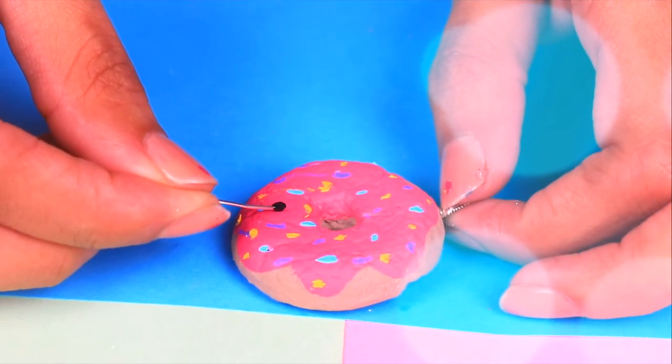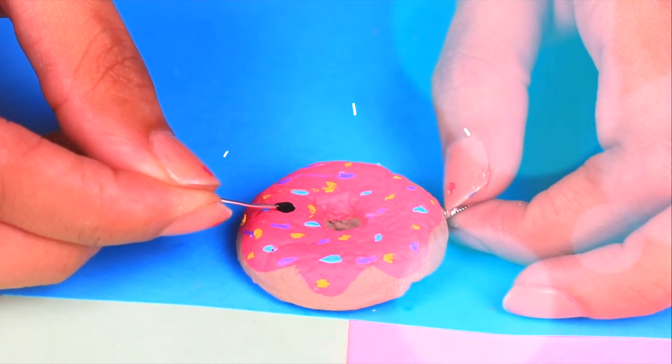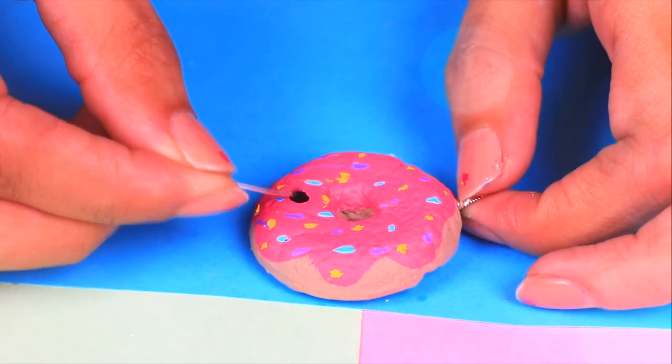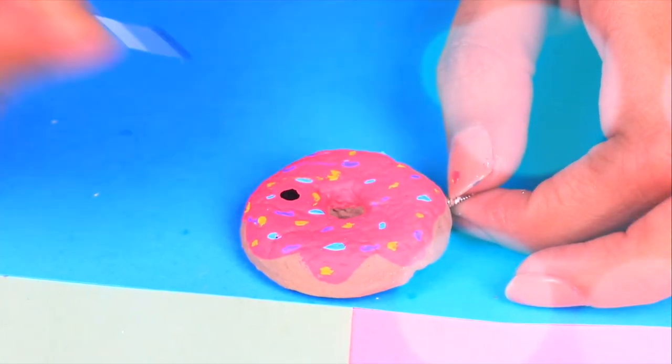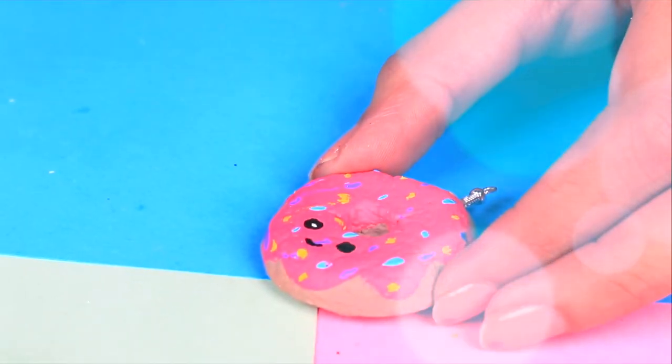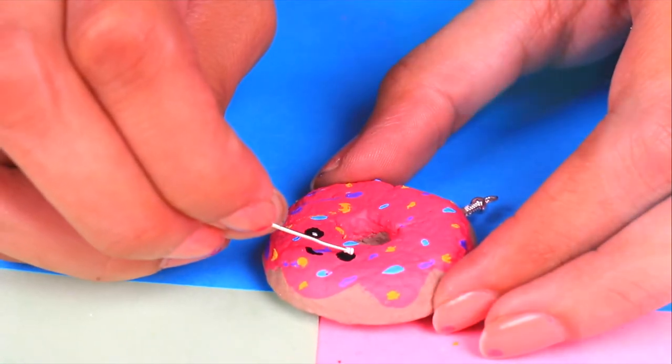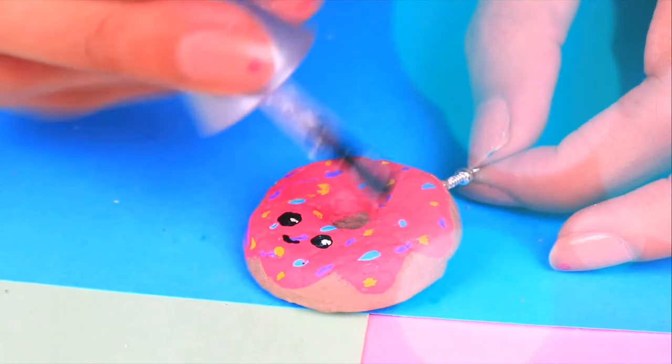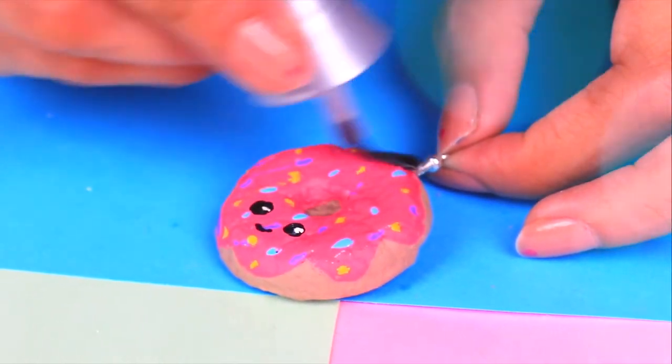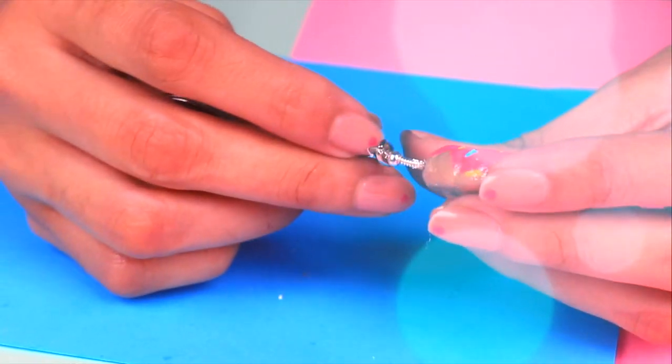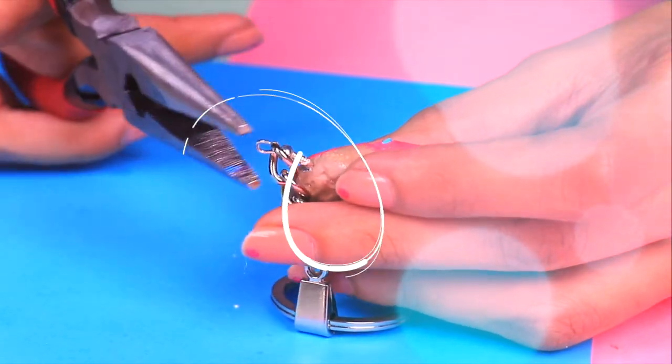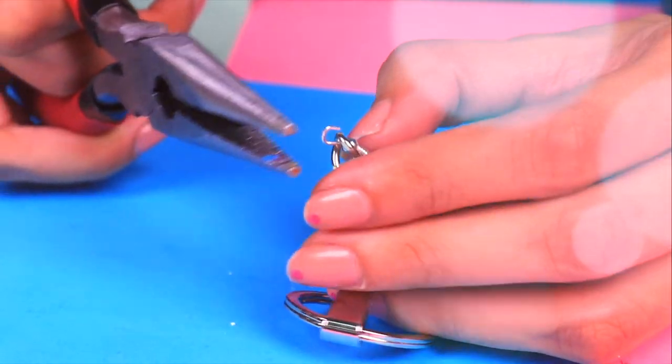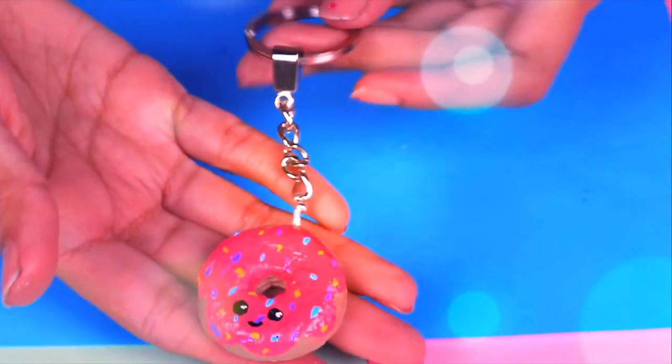But this donut is still missing some cuteness! So let's draw on it a very happy face! We will use black acrylic paint for this step. Then we will change to white to draw its pupils. Same as we did with the other accessories we will put clear nail polish to our donut. We'll put the key holder here and then we'll close the hook with a pair of pliers.